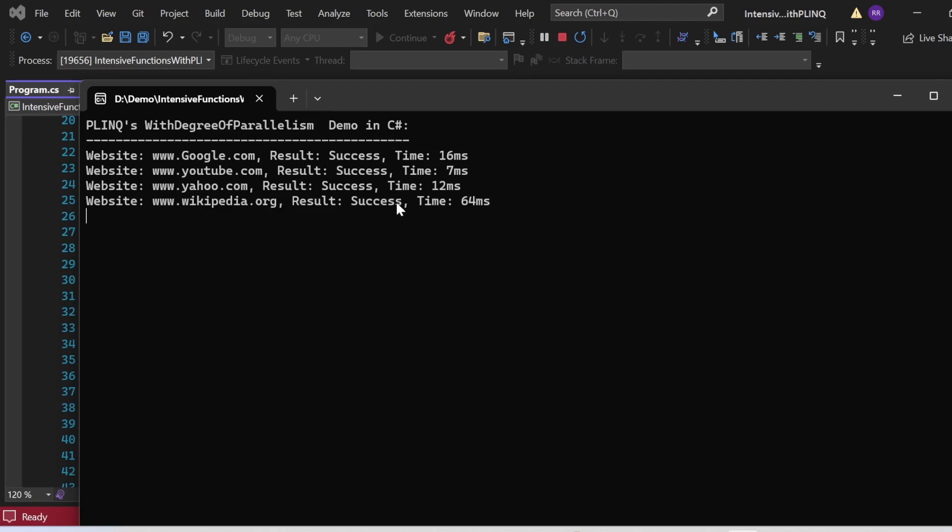WithDegreeOfParallelism basically helped us determine how many websites should ping at once. Here I have pinged four websites simultaneously with the help of WithDegreeOfParallelism. That brings me to the end of my session. In the world of programming, efficiency is key. With PLINQ, you can harness the power of parallelism to tackle I/O intensive tasks like fetching data from multiple websites.